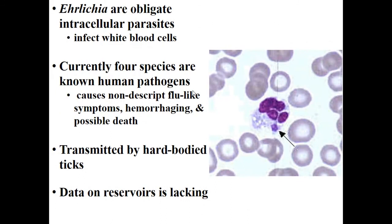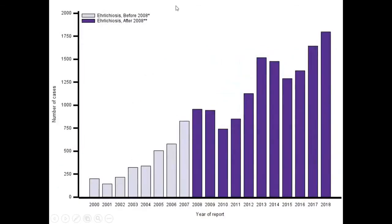I want to wrap up by talking about what we're currently doing in the lab today. This past year, we've been working heavily looking at a third group of pathogens, the Ehrlichiae, which are obligate intracellular parasites that infect white blood cells. Currently there are four species of Ehrlichiae that are known human pathogens. They cause these nondescript flu-like symptoms, which make them hard to identify. But if those conditions persist, they actually infect white blood cells and can cause hemorrhagic disorders, immunocompromise, and possibly even death. And these are actually transmitted by a number of different hard-bodied ticks, not just one species. But what we do know is that there's a general lack of information on reservoirs, particularly of small mammal reservoirs. Yet when we look at cases of Ehrlichiosis in the United States, we see a pretty sharp increase over the course of the 21st century from fewer than 250 cases in 2000 to over 1,750 cases in 2018.